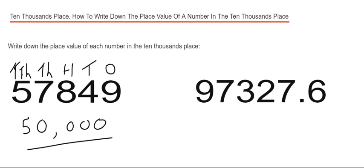Let's have a look at example two. This time we've got 97,327.6. On this one, just ignore the decimal column and count five places...